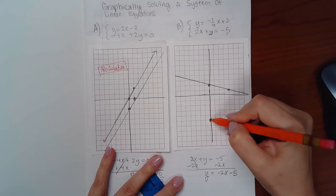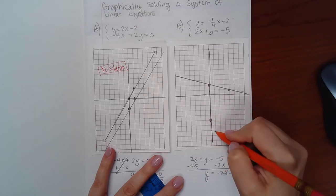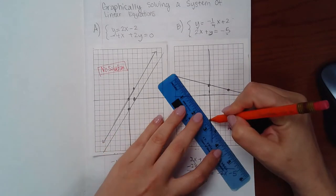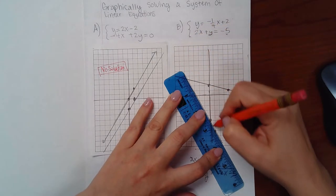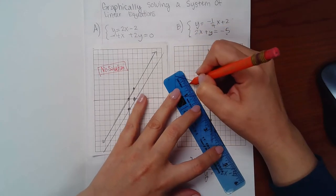So the y-intercept is negative 5. And from there, we go down 2 over 1 according to the slope. So we've got a line that goes in this direction.